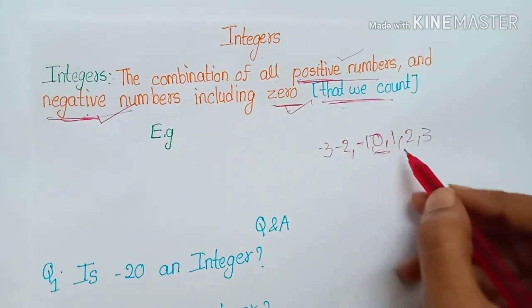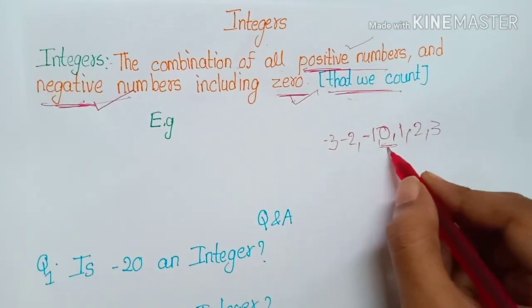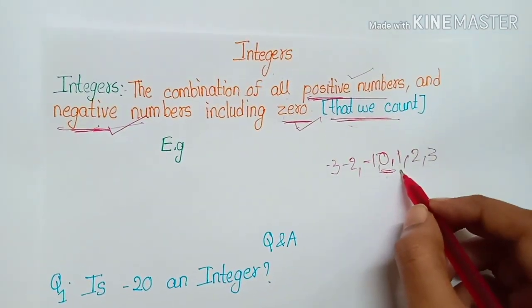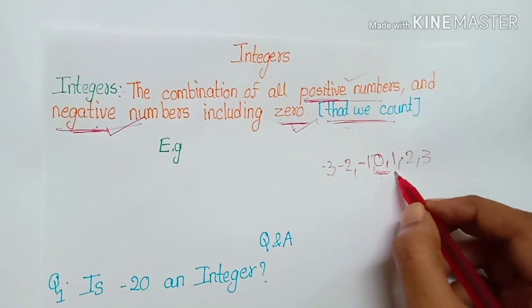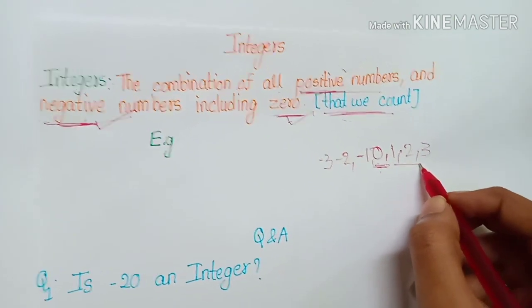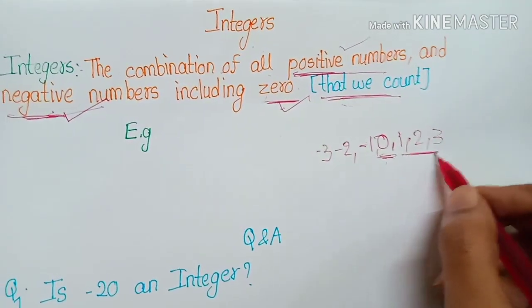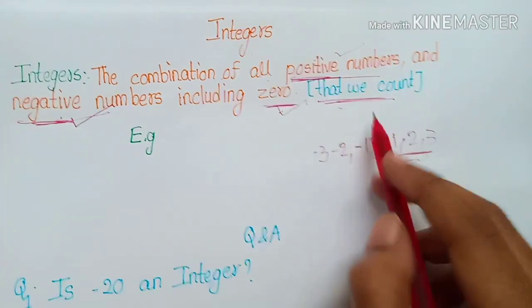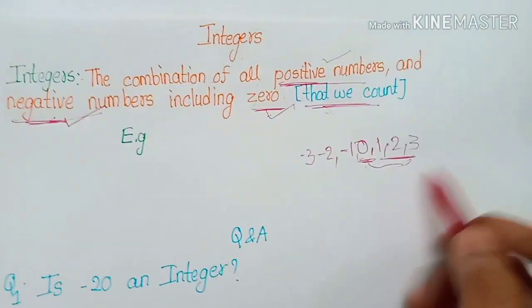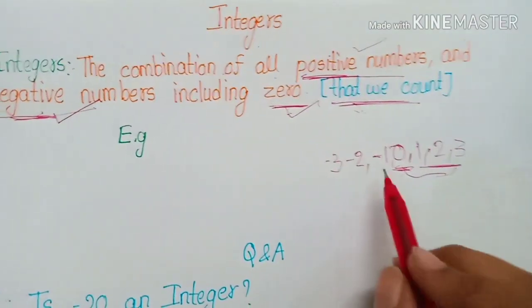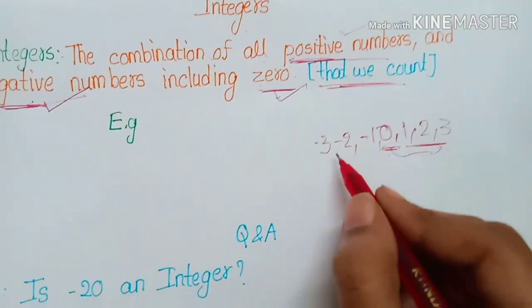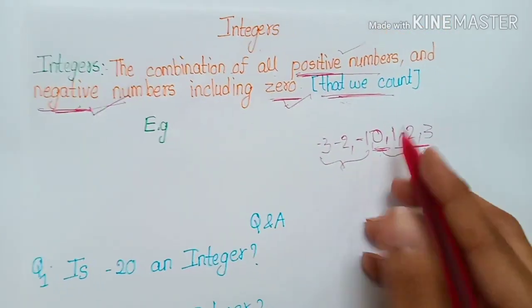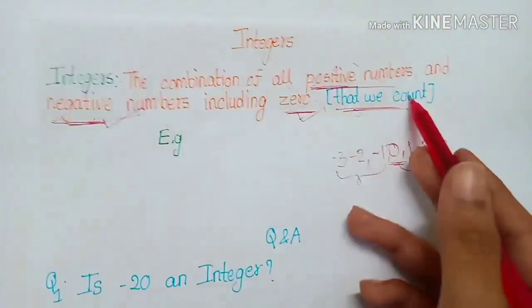We count zero when we don't have anything — we say zero. And when we are asked to count anything we start from one, two, three. So these are integers by the rule that we count: zero, one, two, three. But where do we use negative numbers like minus one, minus two?